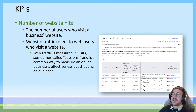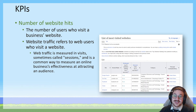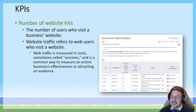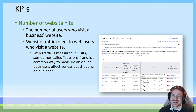Number of website hits refers to the number of users who visit a business's website. This is of significant interest to businesses that have their operations online, such as Google or Netflix. It's slightly less important for businesses that don't operate through the internet, but still a very good indicator of general interest in the community for that business. Every business should be measuring website hits or social media interactions to gauge how attractive they are to their audience online.